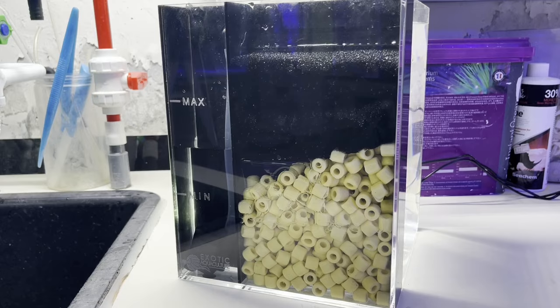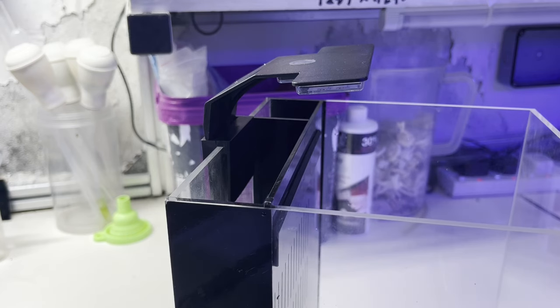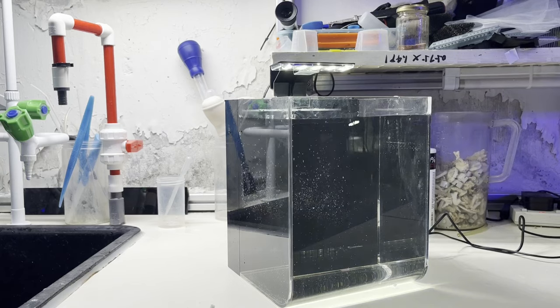Thirdly, we have the return pump compartment. This is where your pump will sit and pump water back up this tube into the spray bar. This spray bar is important as it is what creates the even flow across the tank and keeps the jellies out of this back corner.